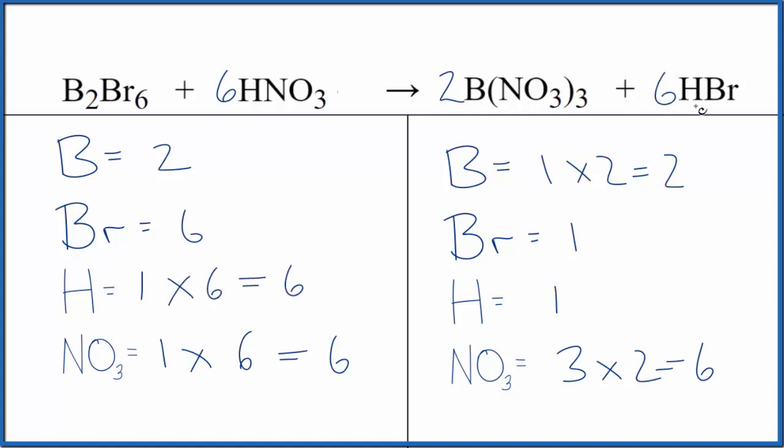But now if we put a six as our coefficient in front of this HBr, one times six balances the hydrogens, one times six balances the bromines, and we're done. This equation is balanced.